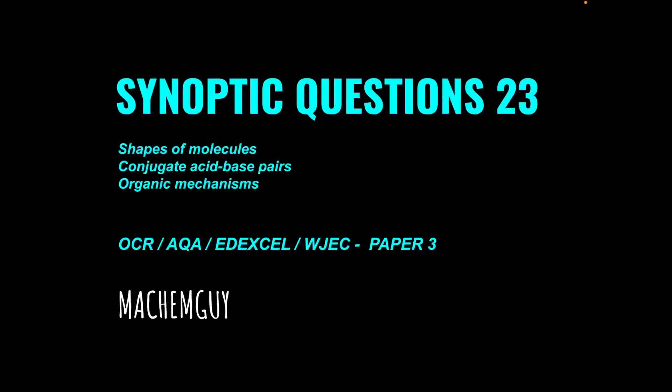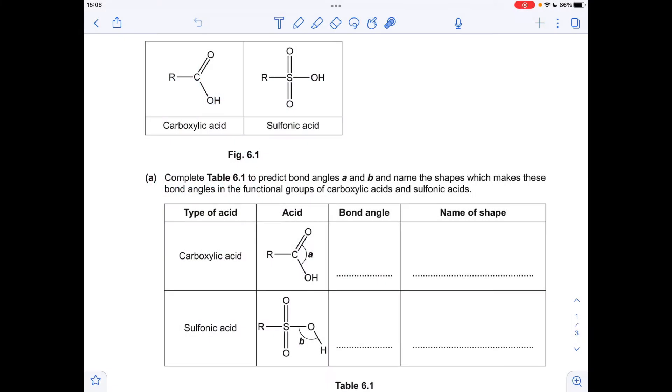I've got another question for the synoptic questions playlist. This one covers shapes of molecules, conjugate acid-base pairs, and organic mechanisms. As always, the link to the questions is in the description if you want to try it first. Okay, so let's make a start.